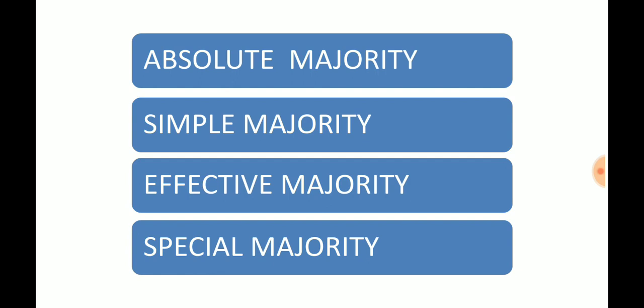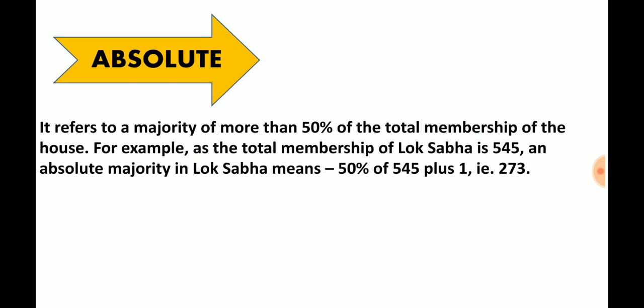Let's look at Absolute majority. For example, you have a class. The majority is more than 50% of the total class. If a class has 200 students, more than 50% means more than 100 — that means 101 is the zone. Clear?